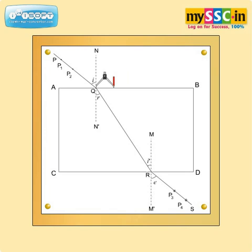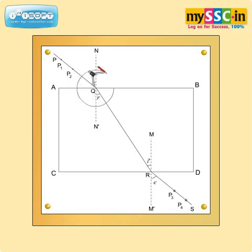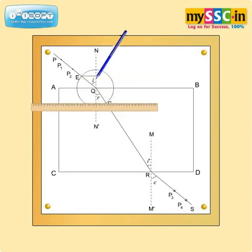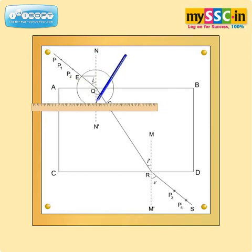With Q as the center, draw a circle with a suitable radius. Label the points E and G as shown in the figure, and draw EF and GH perpendicular to N-dash.